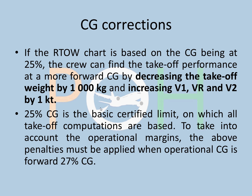CG corrections: from the FCOM, the RTW chart is based on CG at 25%. The crew can find takeoff performance at a more forward CG by decreasing the takeoff weight by 1,000 kg and increasing V1, VR, and V2 by 1 knot each. If the operational CG is above 27%, these corrections apply. For this problem, we assume a 25% CG chart, so no correction is needed.